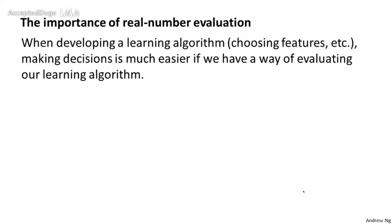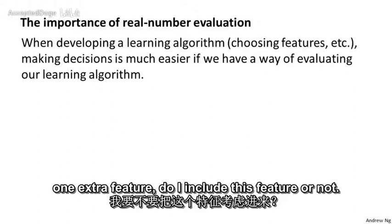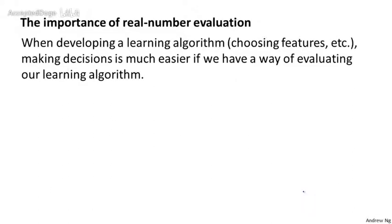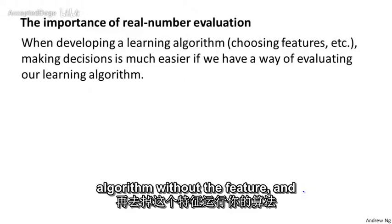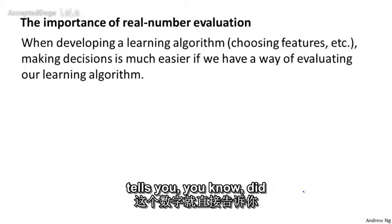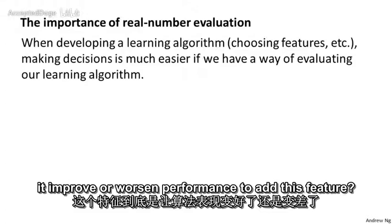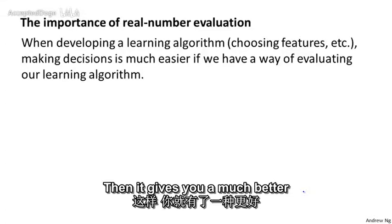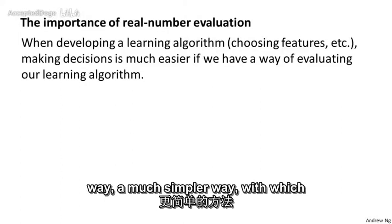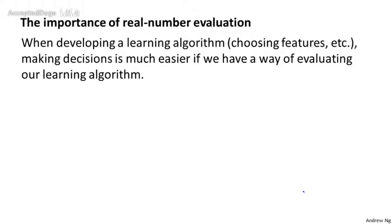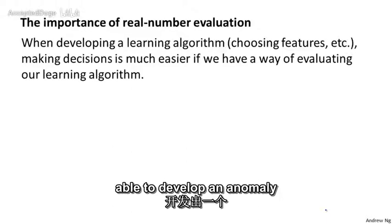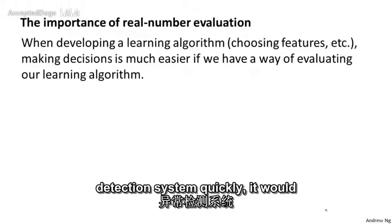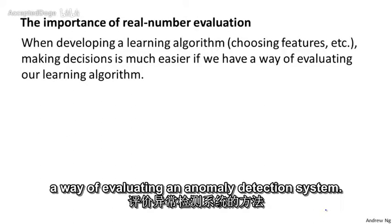So if you're trying to decide whether to include one extra feature, if you can run the algorithm with the feature and run the algorithm without the feature, and just get back a number that tells you whether it improved or worsened performance to add this feature, then it gives you a much simpler way to decide whether or not to include that feature. So in order to develop an anomaly detection system quickly, it's really helpful to have a way of evaluating the system.